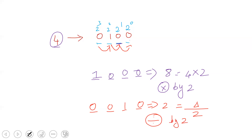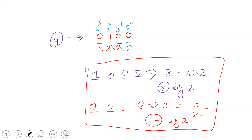So the bidirectional shift register gives you multiplication by 2 or division by 2 using 1-bit left or 1-bit right shift. This is an important application.